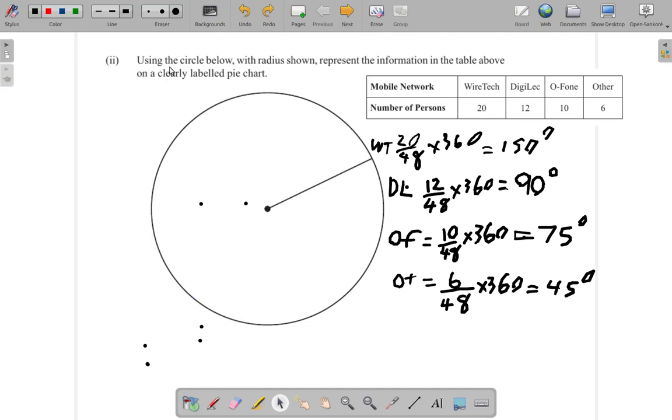Now, they said using the circle below with radius shown, represent the information. You could use your protractor if you have one to get accurate angles, but you're not really looking for perfect accuracy. So DigiLogic, probably 90 degrees would be about like this. So the DigiLogic here with 90 degrees, and the number is 12.